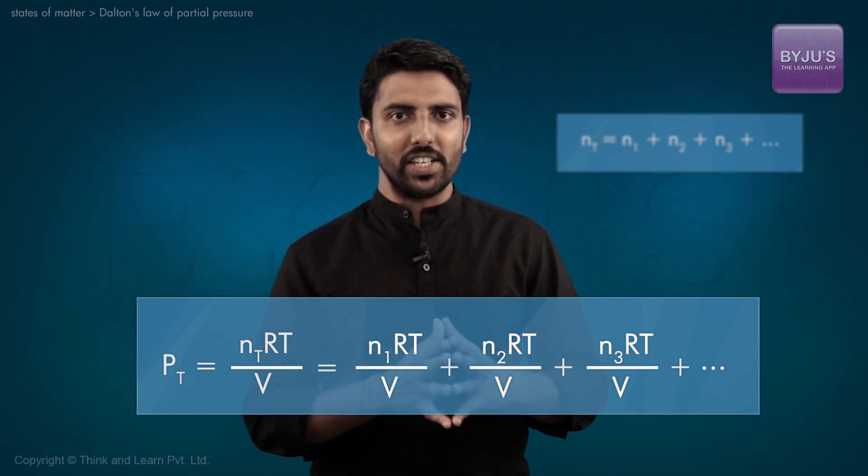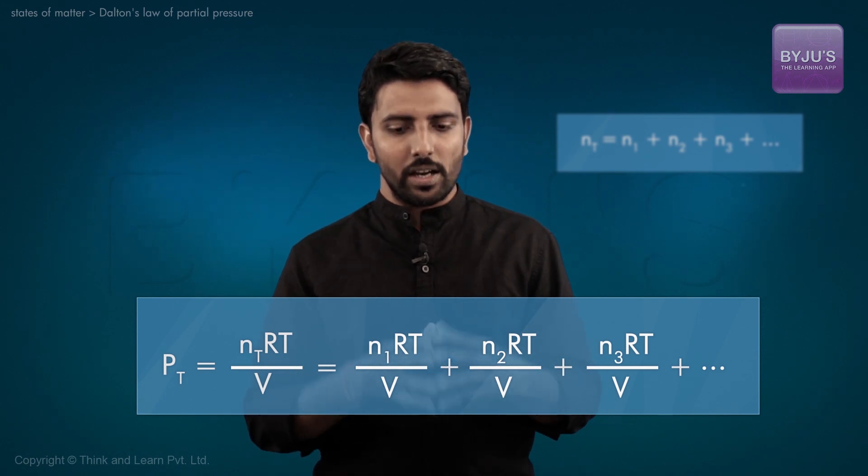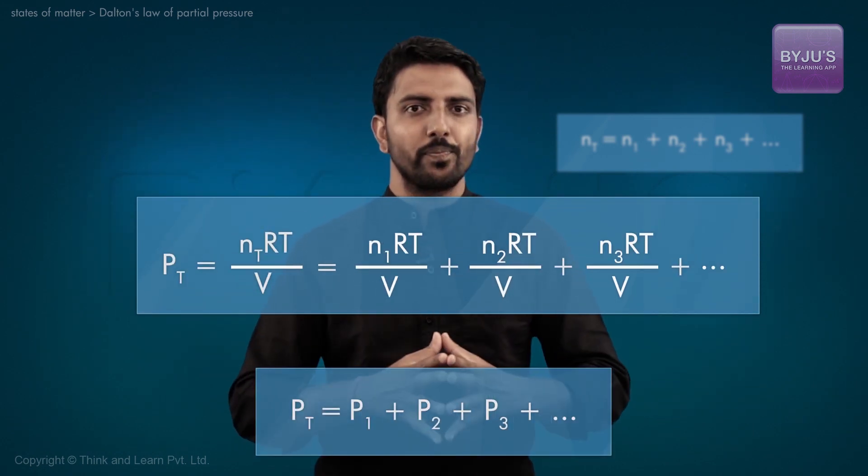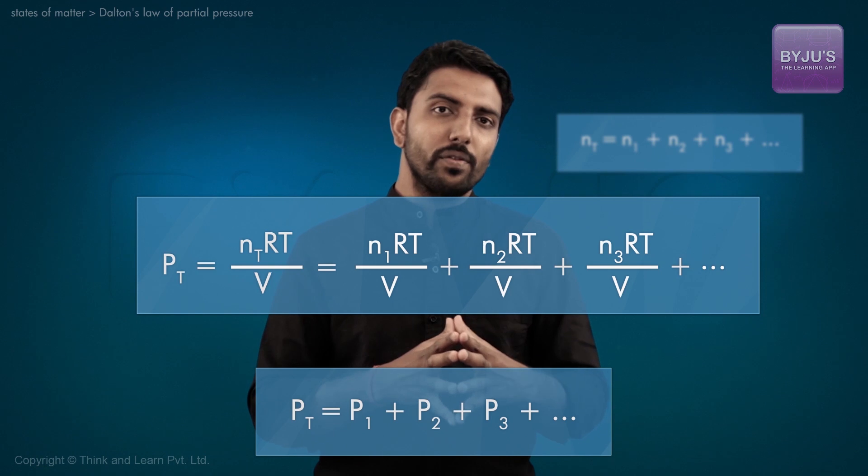Thus, the total pressure of the ideal gas mixture is the sum of the partial pressures of the individual components of the gases.